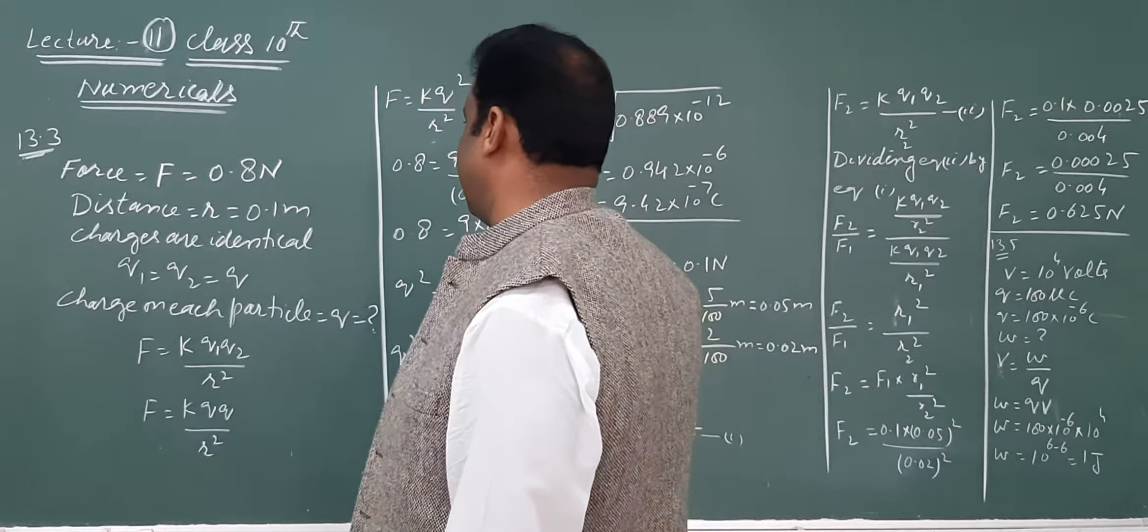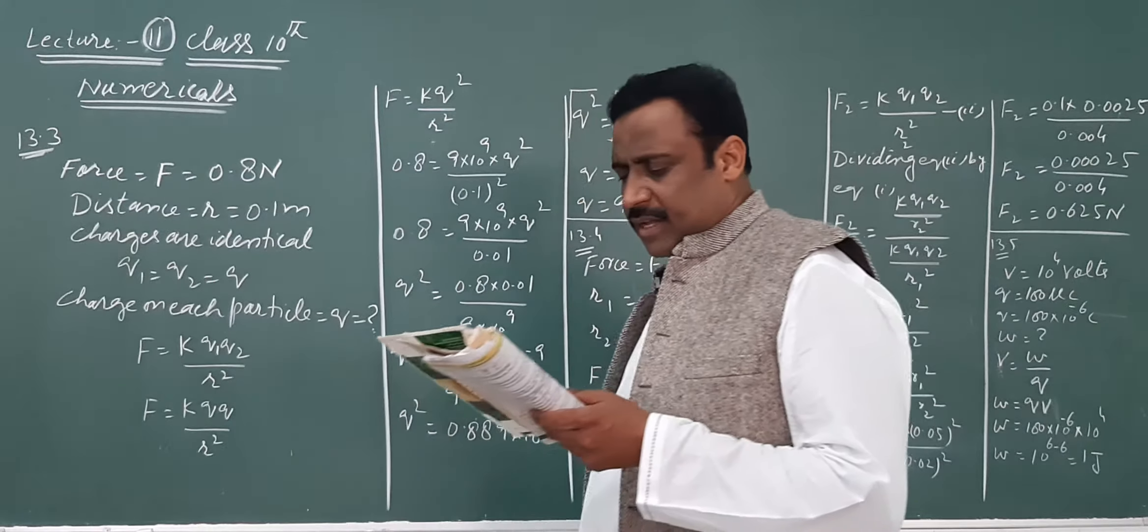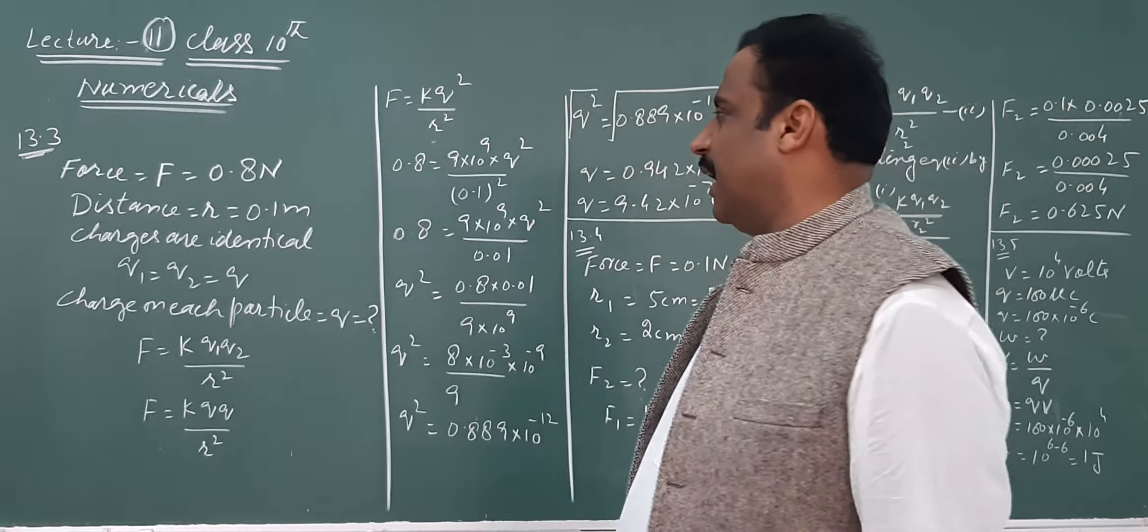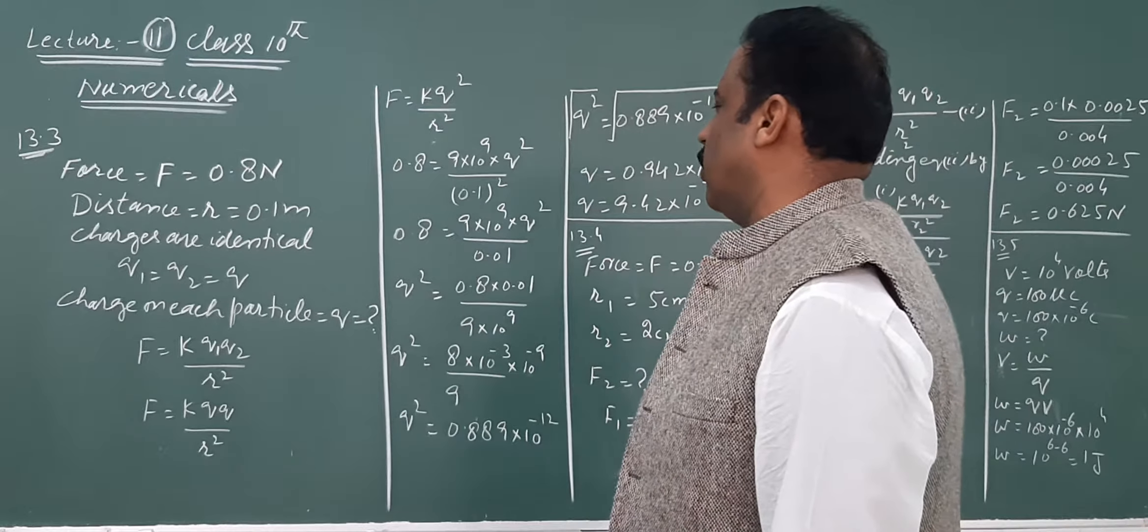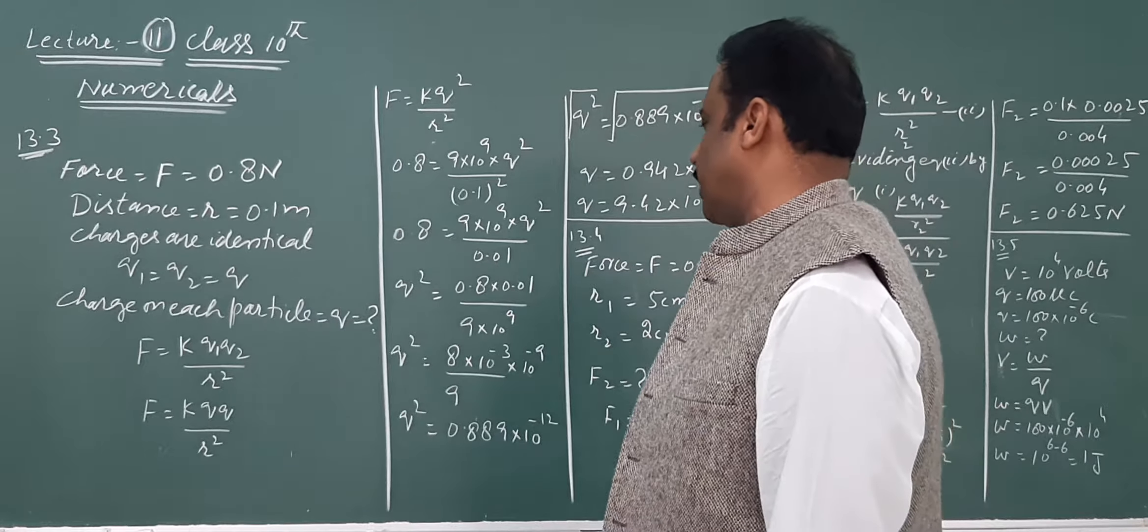13.3 numerical ko hum solve karne lage hain. The statement says: the force of repulsion between two identical point charges is 0.3 newton when the charges are 0.1 meter apart. Find the value of each charge. We have to find the value.